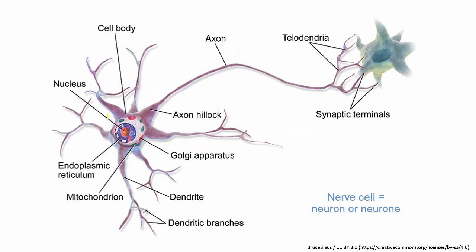A nerve cell, properly called a neuron or a neurone, still has all those organelles, but its shape is quite different. The main cell body of the neuron is here, and it contains all those organelles. You can see here the mitochondrion and the nucleus.